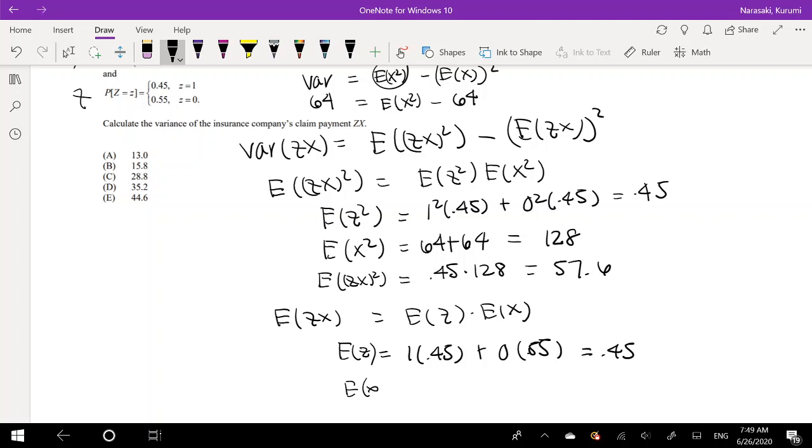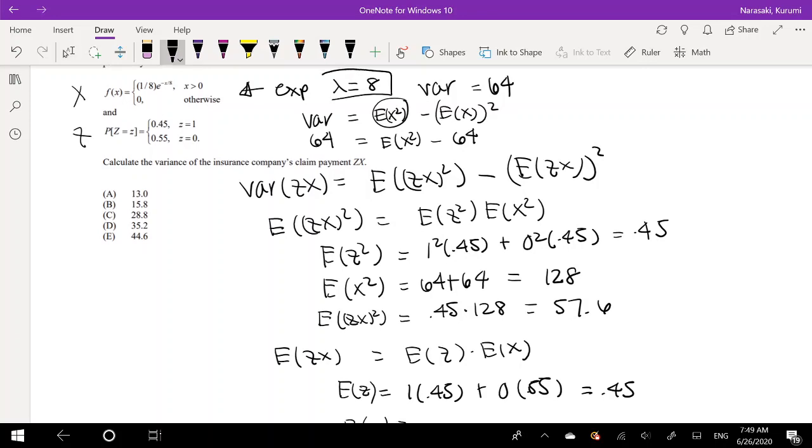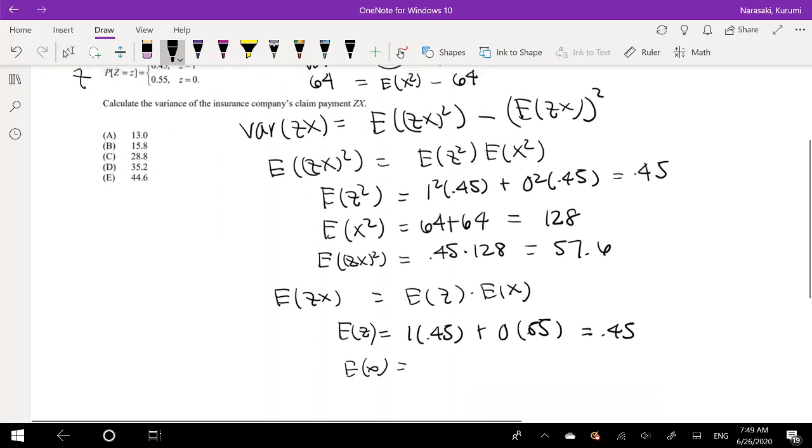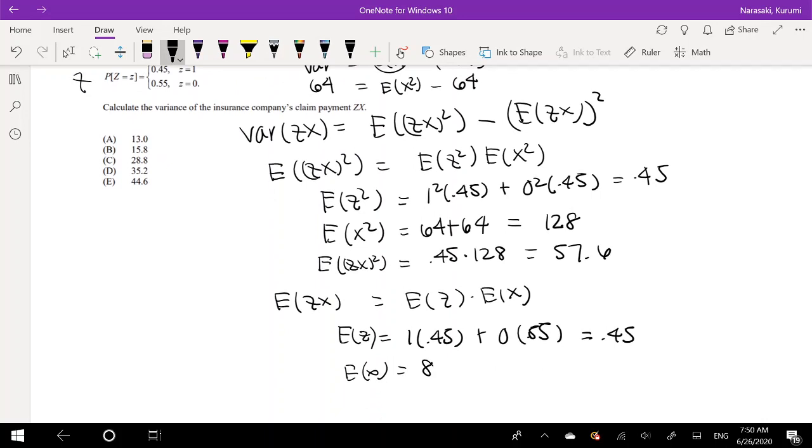How about for X? Lambda equals the mean, so that's 8. Therefore E(ZX) equals 0.45 times 8. Plugging into the calculator, 8 times 0.45 equals 3.6.